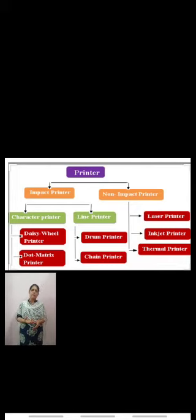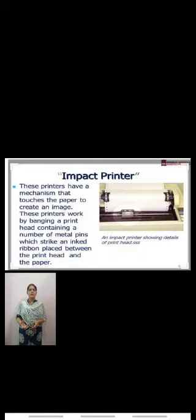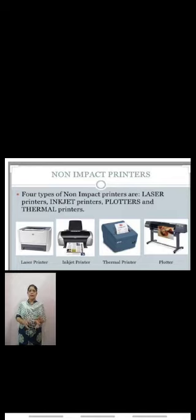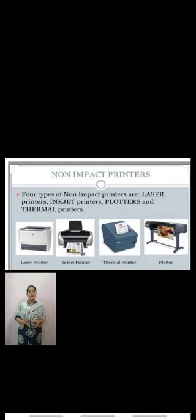Impact printers have a mechanism that touches the paper to create an image. Non-impact printers print without banging a ribbon onto paper. Examples of non-impact printers are inkjet printers, laser printers, and thermal printers.